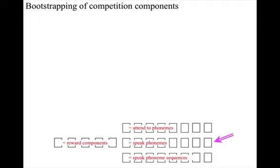In other words, there's genetically connected connectivity from each of these components to different combinations and sequences of muscles in the mouth, the tongue and the throat. The speak phoneme sequences components have a genetically defined capability to target different combinations of the 150 speak phoneme components.